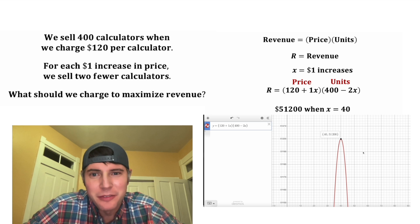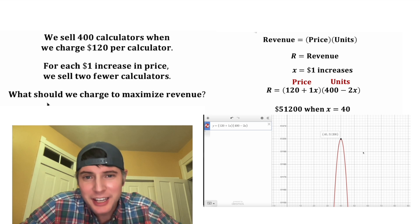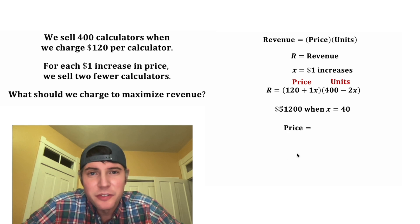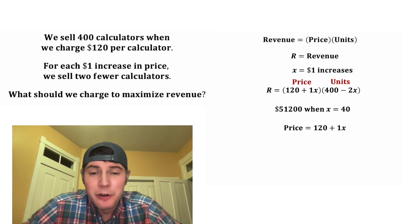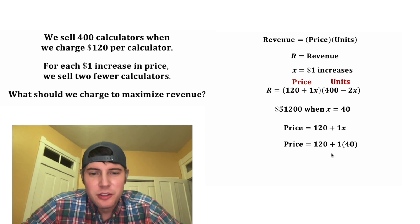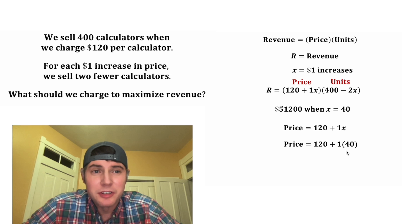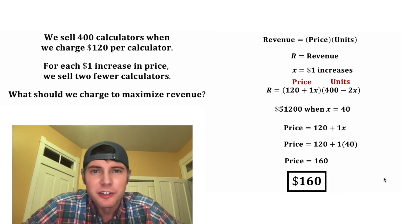So that is our maximum revenue. But the question is specifically asking about the price we should charge. So let's find the price that gives us the $51,200. We know that the price is equal to 120 plus 1X, and we know that X is equal to 40. So the maximum price would be 120 plus 40, which is 160. And that is the answer to our question, $160.